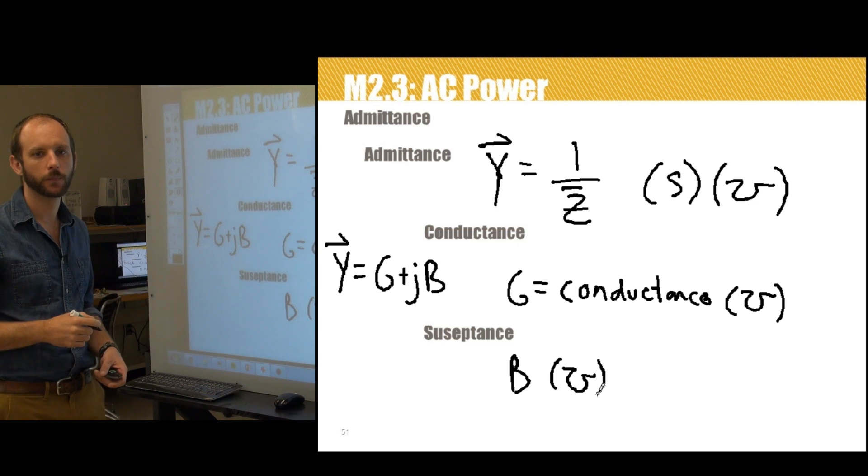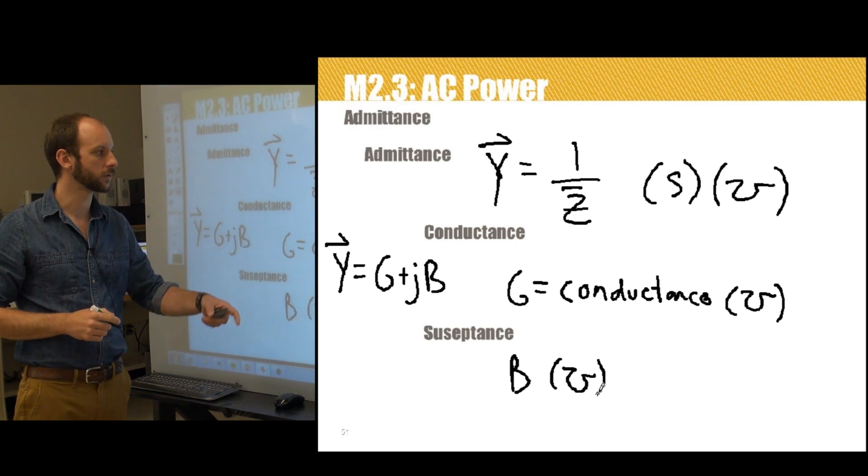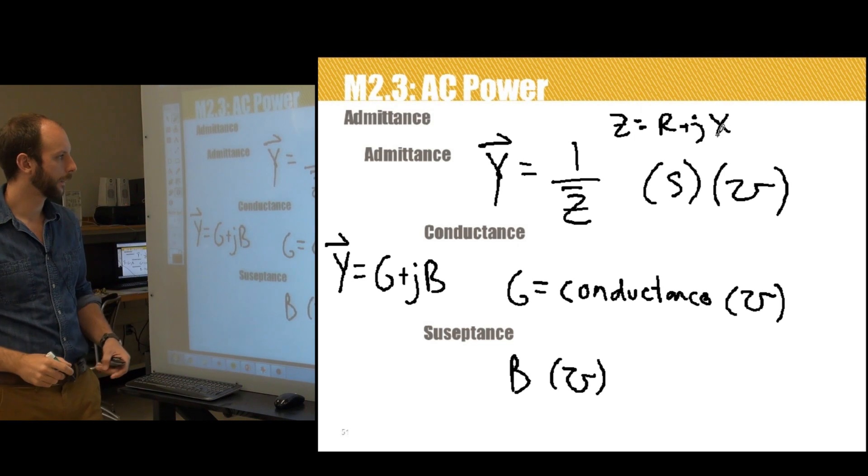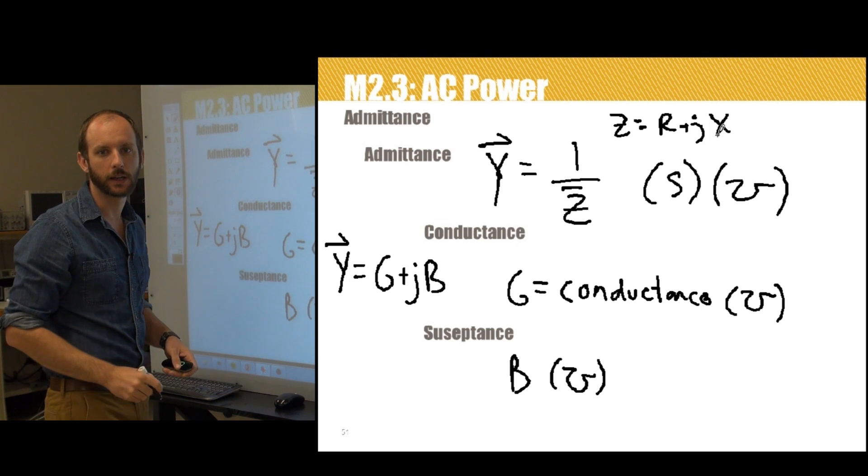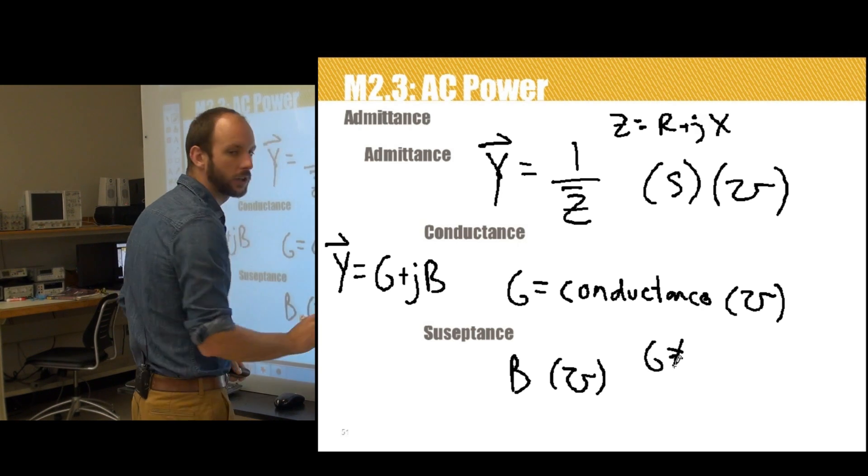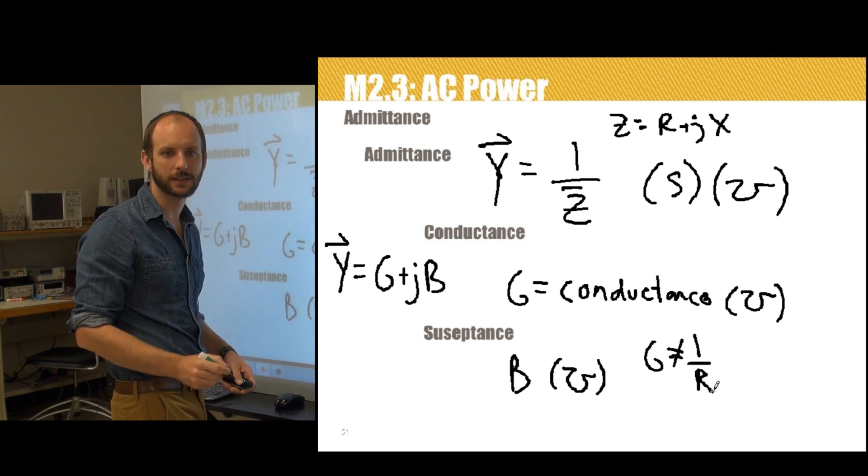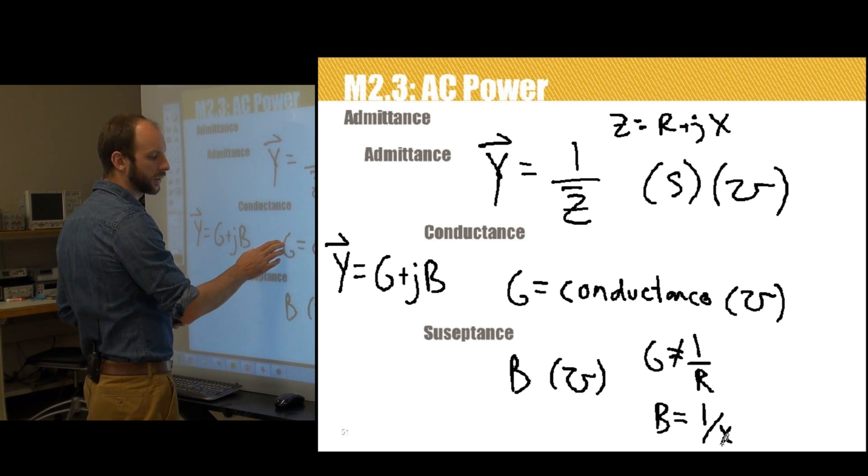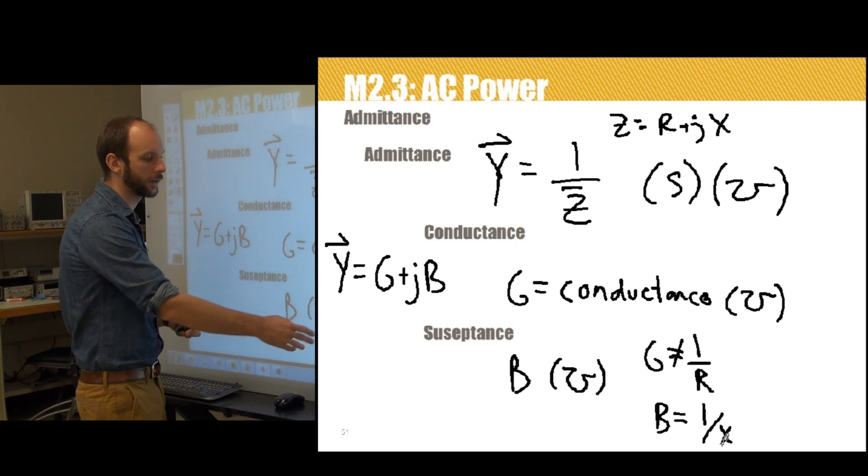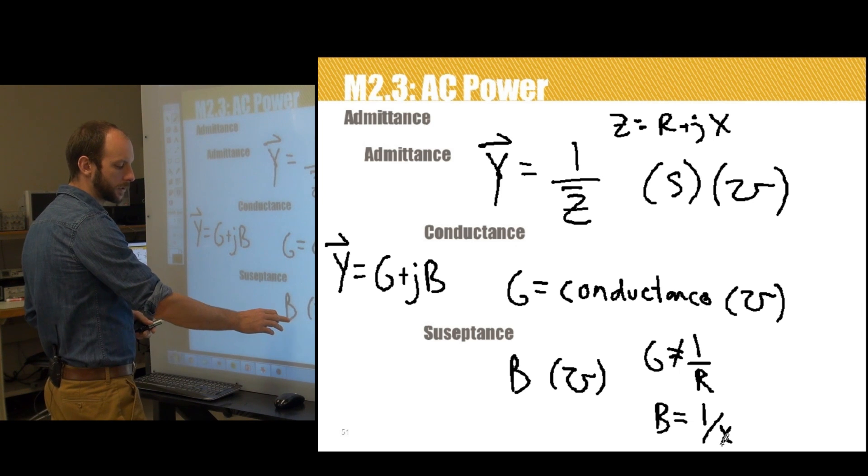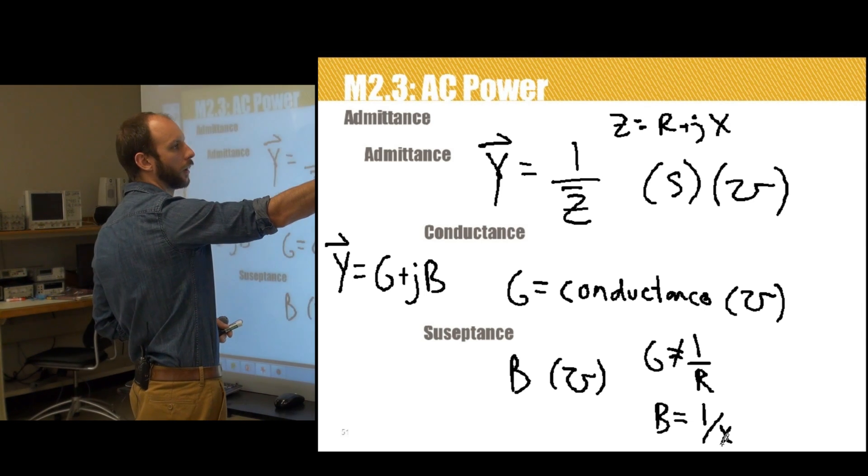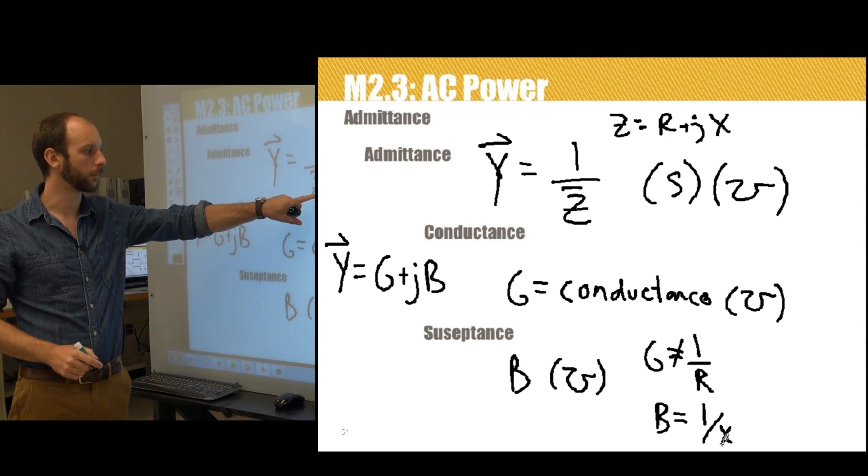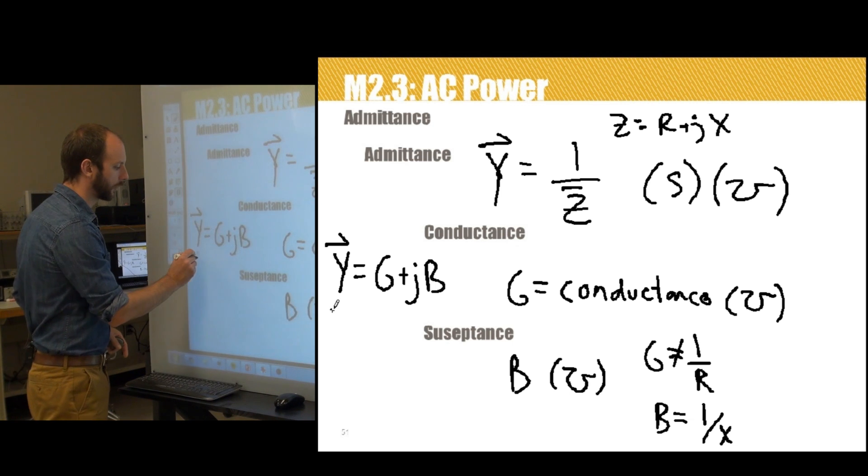Note that due to the complex nature of Z—remember Z is R plus jX—we cannot say that G equals 1 over R, and we cannot say that B equals 1 over X. The conductance is not the inverse of resistance. Susceptance B is not the inverse of reactance. You actually have to divide 1 by the complex number Z and then decompose it into its rectangular real and imaginary parts.